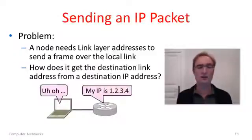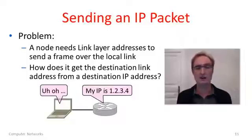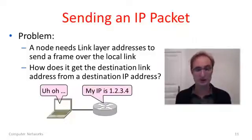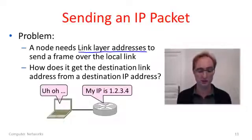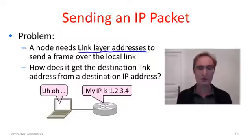Moving on to the second problem: how do you send an IP packet? To do that you need to craft the header, which has all sorts of addresses — source and destination IP addresses and source and destination link layer addresses. If we're trying to send a packet to a certain IP address, the question is where do we get the link layer addresses to go with the frame to send it over the local link. A client might know the IP address of the router it's trying to reach, but it still needs to make the packet with all addresses including the link layer.